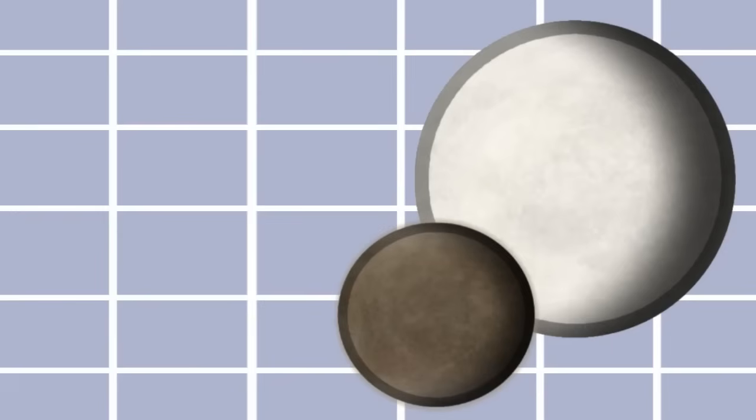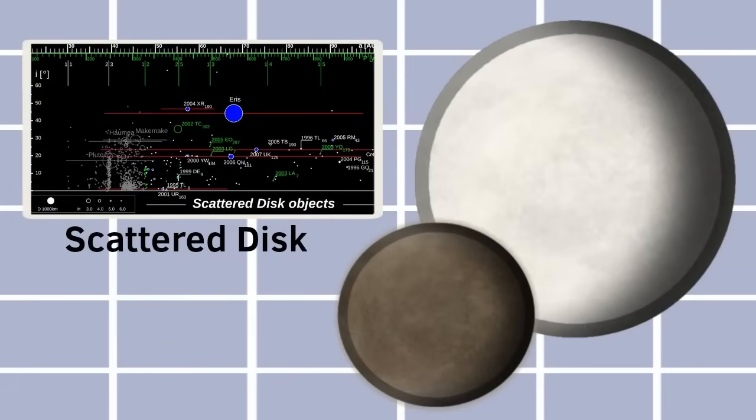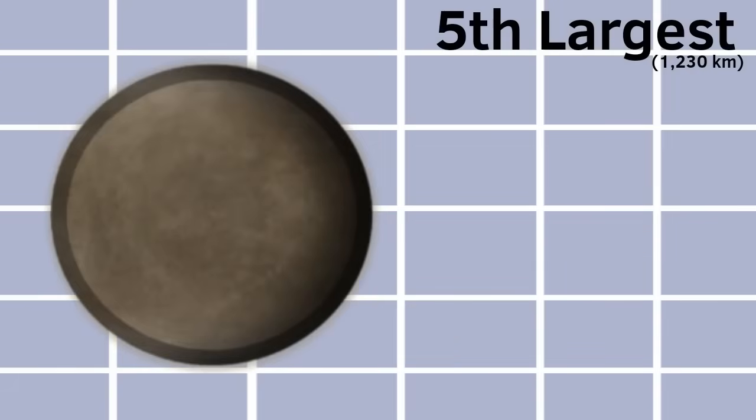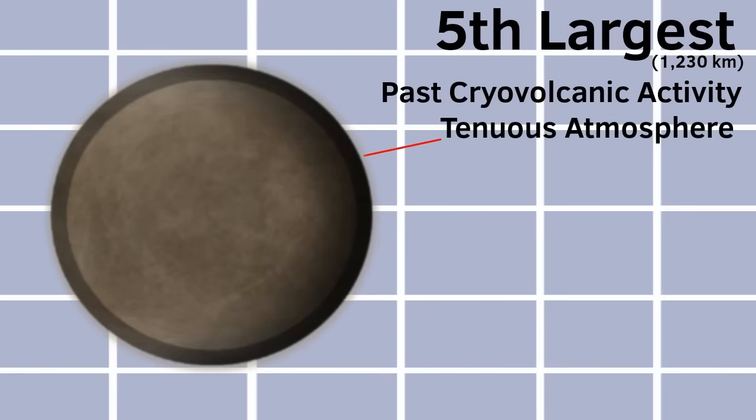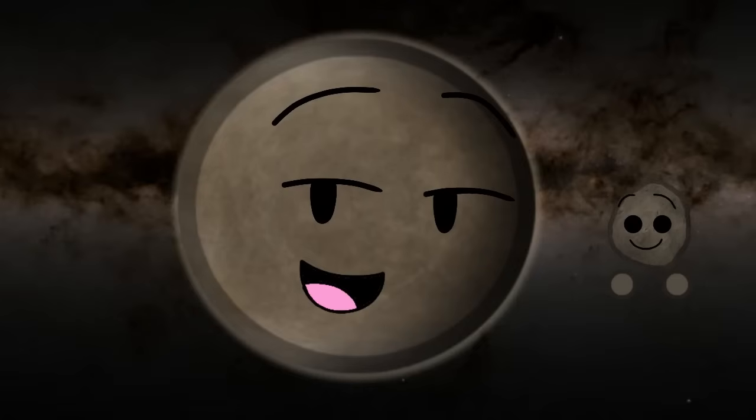Along with Eris, me and her are in the scattered disk, which is where objects thrown out by Neptune in the past are located and orbit the sun. I am the fifth largest dwarf planet, and I'm around 1,230 kilometers, and I might even once had cryovolcanoes in my past. And I also have a thin, tenuous atmosphere of my own as well. Okay, I think that's all I have to say. Bye!